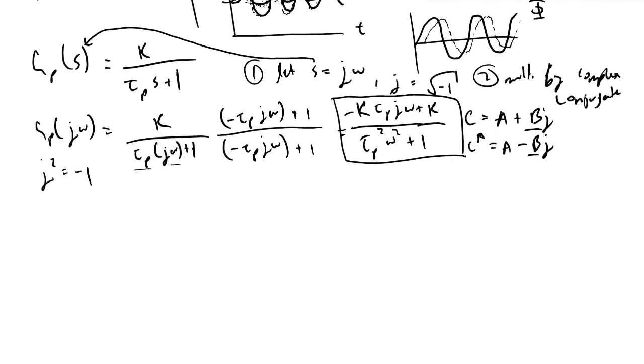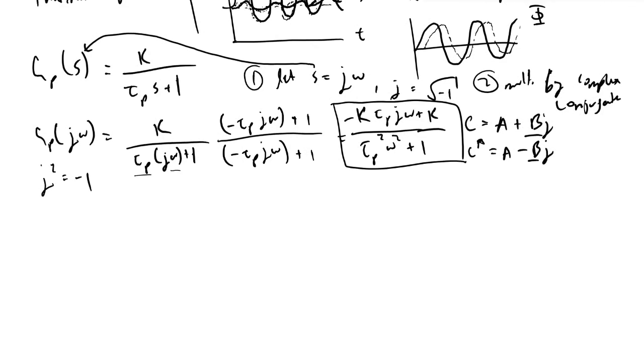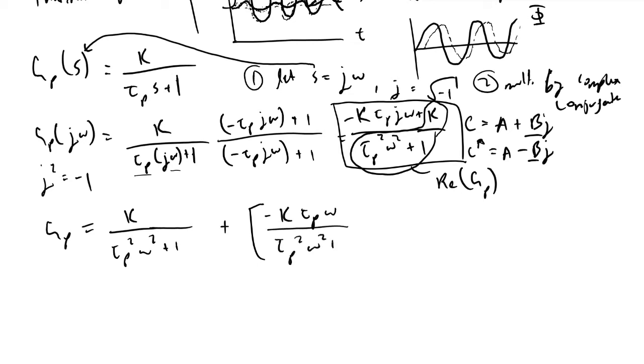What we find from this is that we can now break gp into its real and imaginary parts. This is a critical part of our FRA. When we do that, we'll recognize this part will be equivalent to the real part of gp. The other part will be the imaginary part without the j. So we will rewrite gp as k over tau p squared omega squared plus one, and then we will add it to the quantity minus k tau p omega over tau p squared omega squared plus one times j.